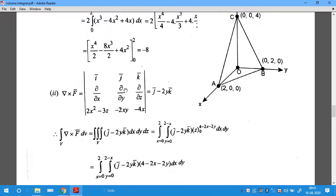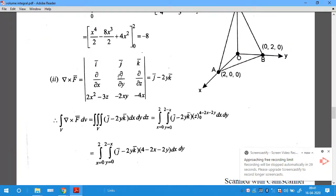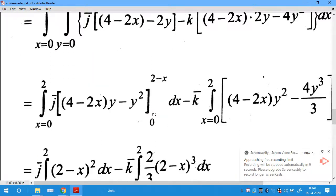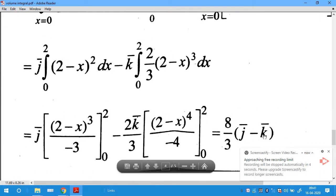For the second part, we compute ∇×F̄. ∇×F̄ is the determinant with rows: i,j,k; ∂/∂x,∂/∂y,∂/∂z; and the components of F̄. After computing ∇×F̄ and integrating as above, we get the solution: (8/3)(j̄-k̄). Thank you.